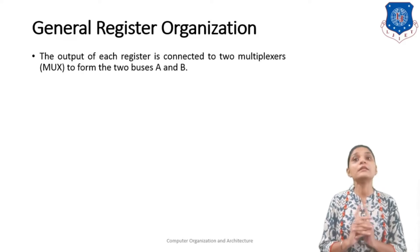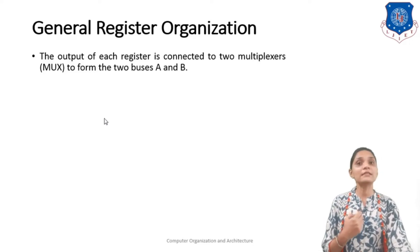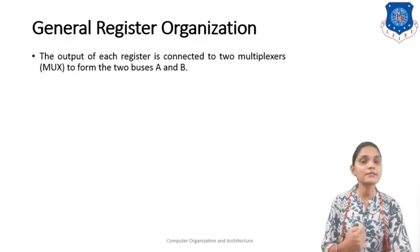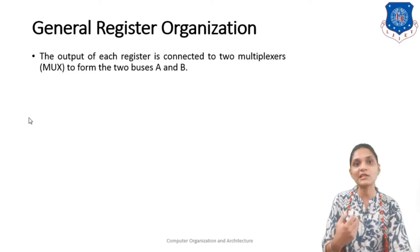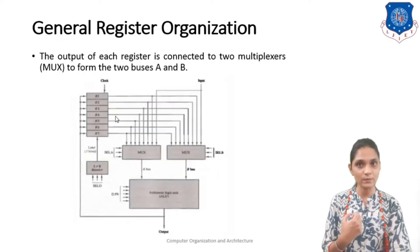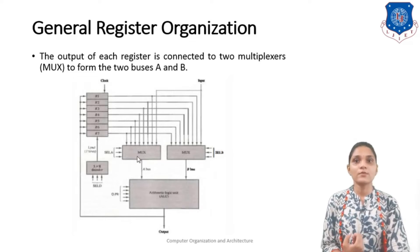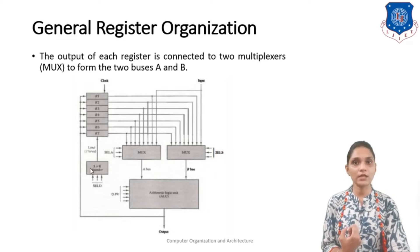Here, we are going to see the example of 7 registers and how we can organize them. These 7 registers are connected using MUX. The output of each register is connected to two multiplexers, which we abbreviate as MUX A and MUX B, to form two buses A and B. Here we have total 7 registers — R1, R2, R3 up to R7 — connected through a 3-to-8 decoder.